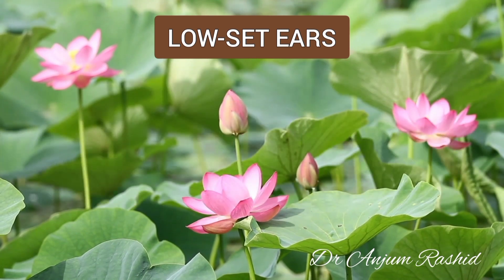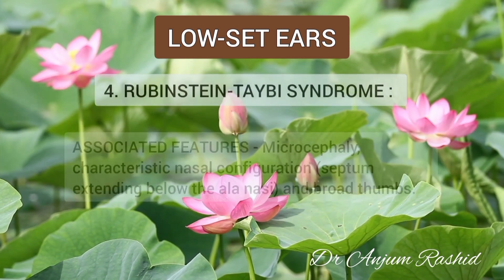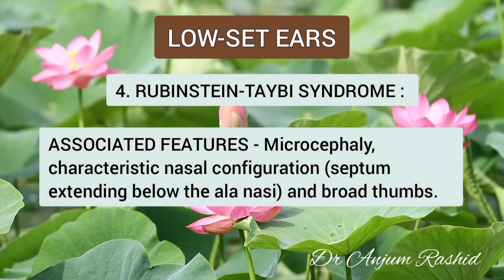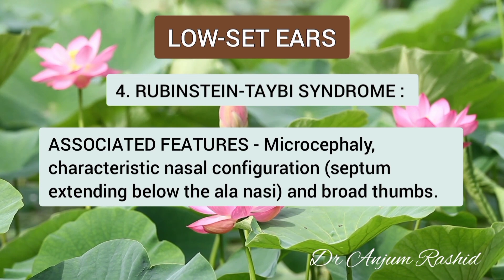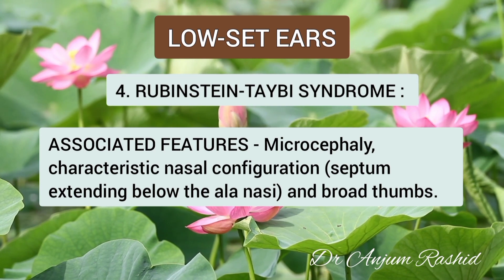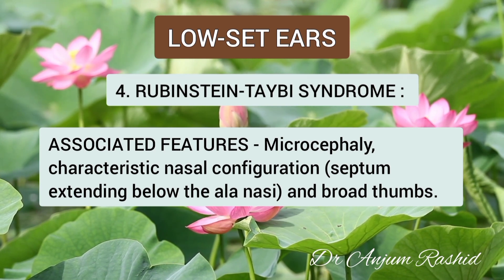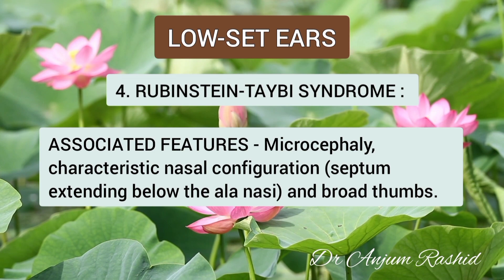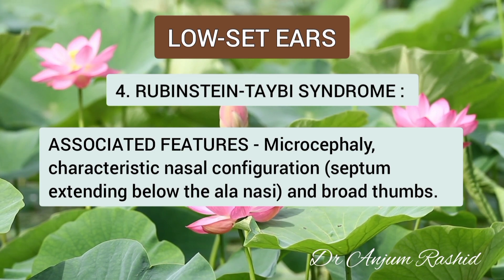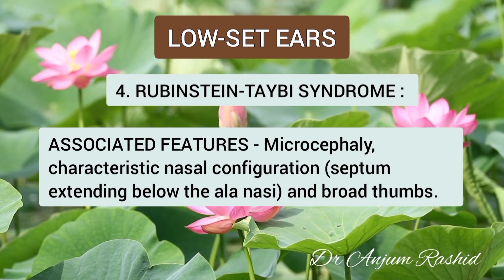Number four is Rubinstein-Taybi syndrome. Associated features include microcephaly, characteristic nasal configuration — that is the septum extending below the alae nasi — and broad thumbs.